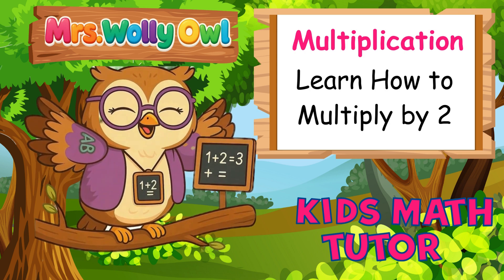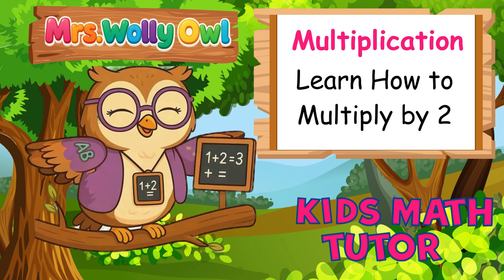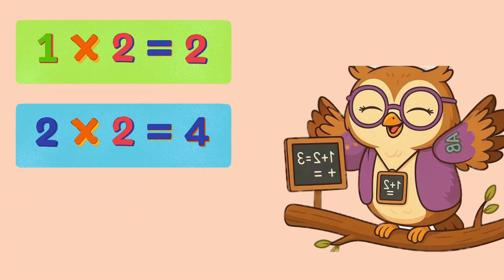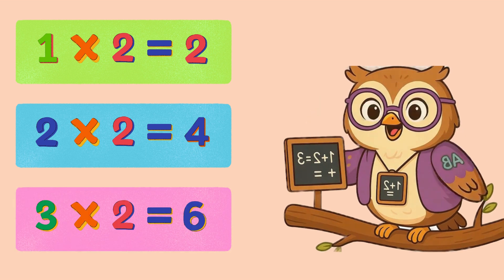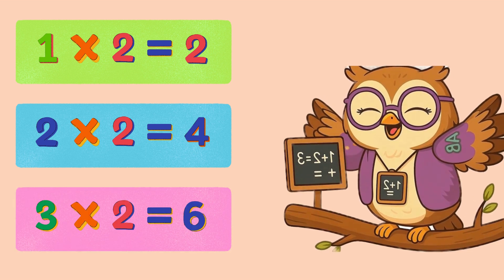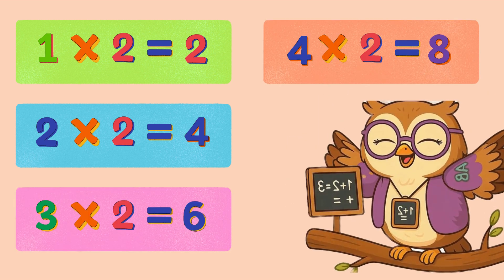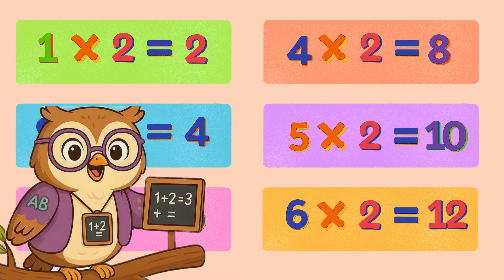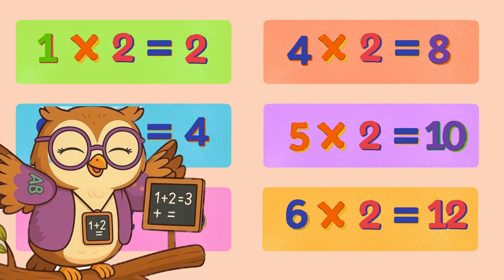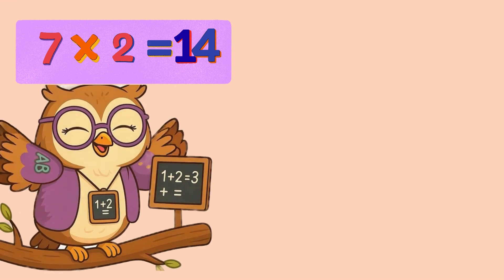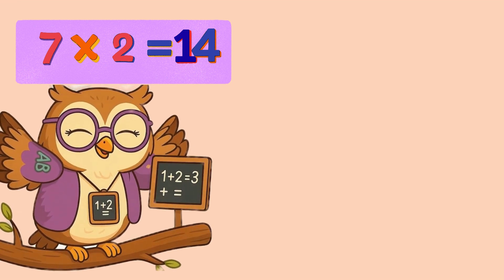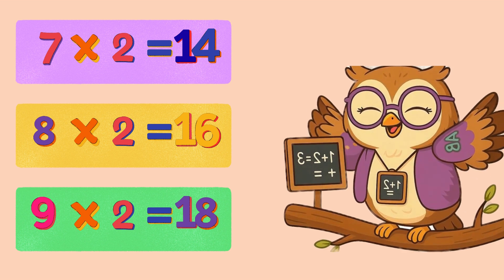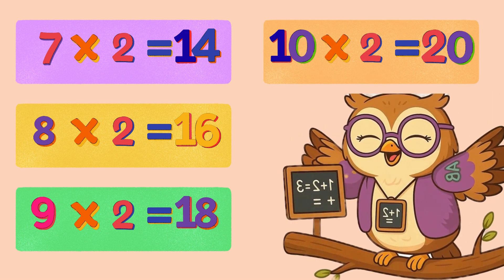Together we'll sing the two-times song. One times two is two. Two times two is four. Three times two is six. Four times two is eight. Five times two is ten. Six times two is twelve. Seven times two is fourteen. Eight times two is sixteen. Nine times two is eighteen. Ten times two is twenty.